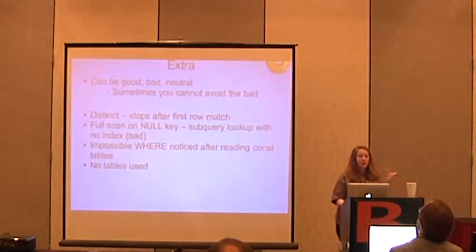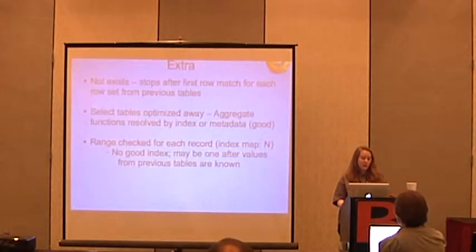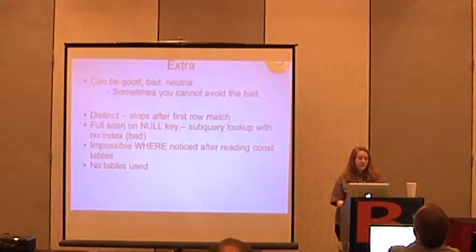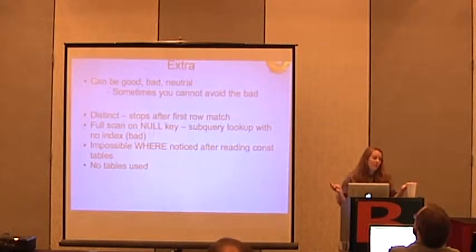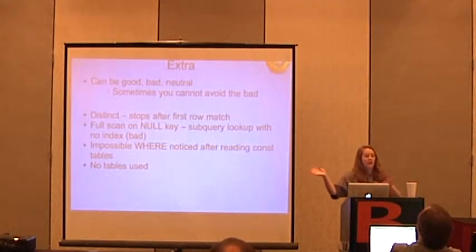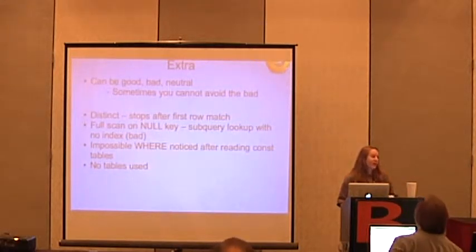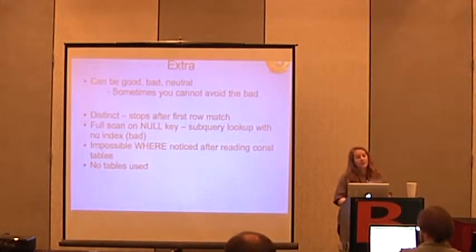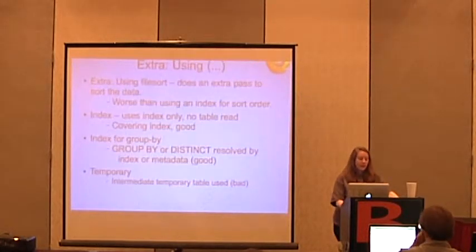There's also a field called EXTRA, which has a bunch of stuff: whether you use WHERE, whether you use DISTINCT, whether you use no tables, whether you have 'impossible WHERE noticed after reading const tables.' What that means — if you have an auto-increment ID and you say WHERE id = -4, it will know that the ID values go from 1 to 100, so negative four isn't even a possible value. It'll say 'impossible WHERE noticed after reading const tables.'